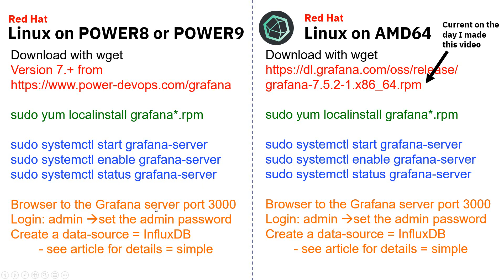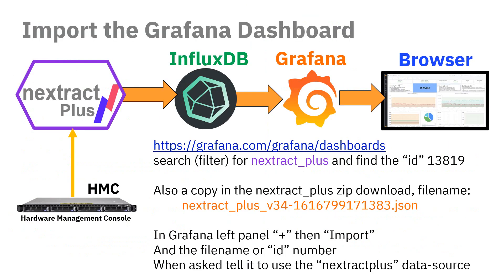Then we're going to browse to the Grafana server — I use the same machine as InfluxDB, but you don't have to. You log in on port 3000 as admin; it has a default password when you start up, and you can set the admin password at that point. Then you'll go to create a data source, which is our InfluxDB. See the article for details — it's quite simple to do.